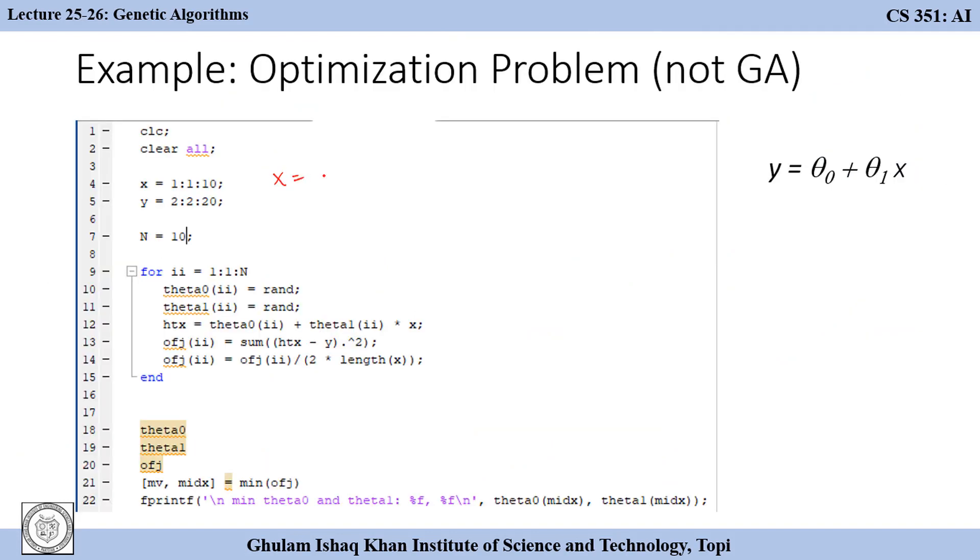We start with initializing vector x. The syntax for initialization is starting element, the last element, and the increment. For example, if x is initialized 1 colon 2 colon 10 then we start with 1, add increment 2 get 3, add increment 2 get 5 until 11 is greater than 10.